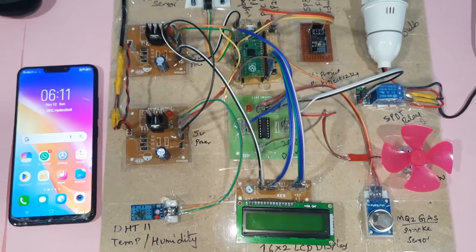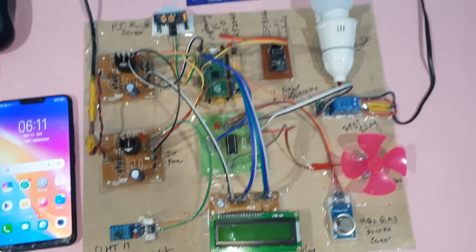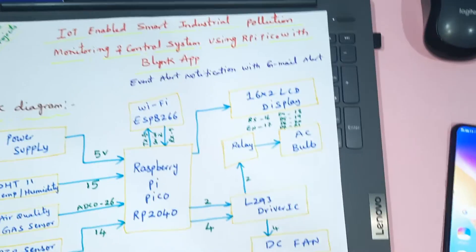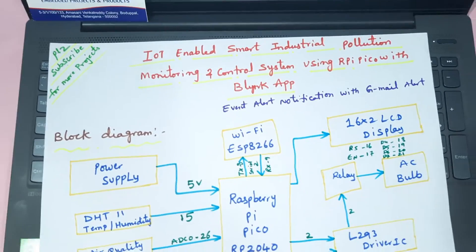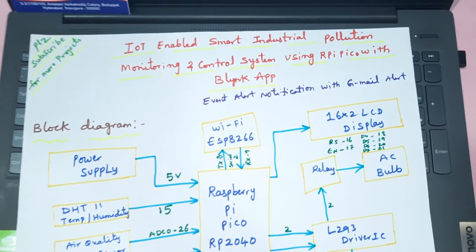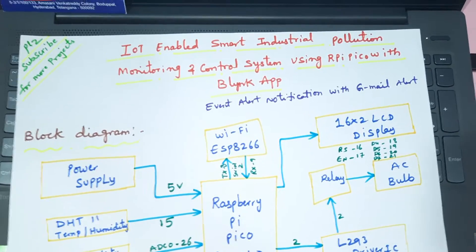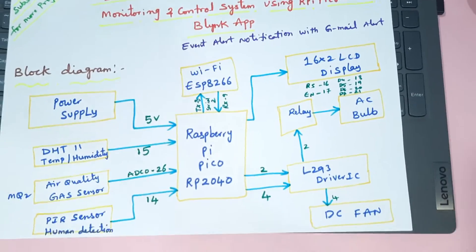Hi, we are from SVS Embedded. The project title is IoT-Enabled Smart Industrial Pollution Monitoring and Control System using Raspberry Pi Pico with the Blynk app application.